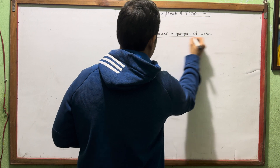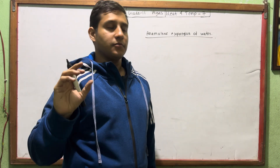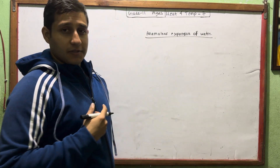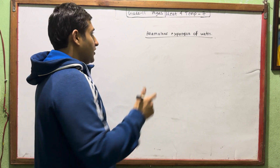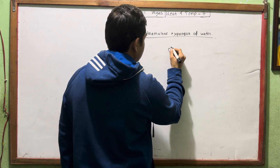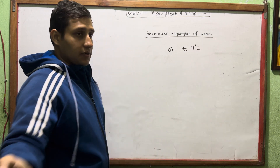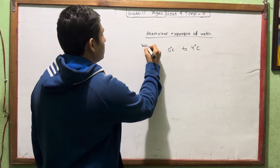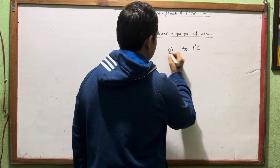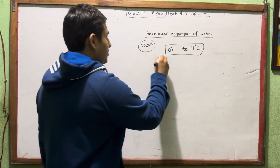Now I am going to explain the anomalous expansion of water very quickly. When water is heated from 0 degrees Celsius to 4 degrees Celsius, it actually contracts instead of expanding. This is the anomalous behavior of water between 0 and 4 degrees Celsius.